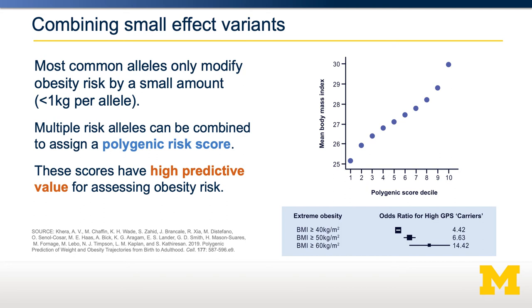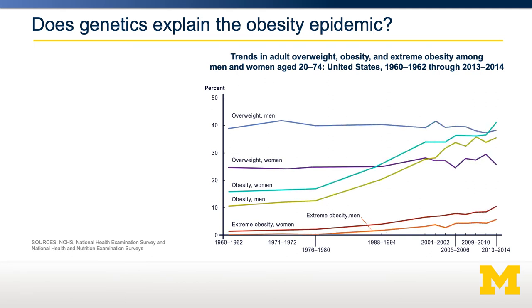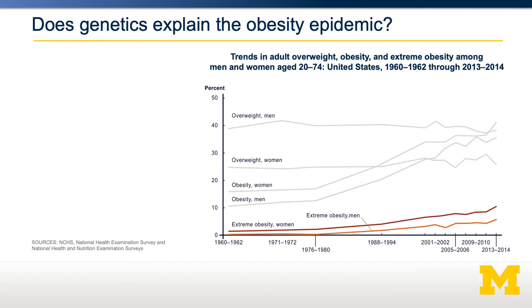Does genetics explain the increase in obesity? Since the 1970s the number of individuals with obesity has increased quite dramatically. The number with extreme obesity — defined as a BMI over 40 — has increased from being quite rare to nearly 10% of the population. This is a major public health challenge.